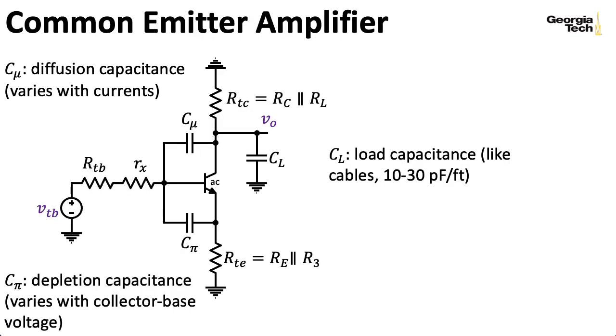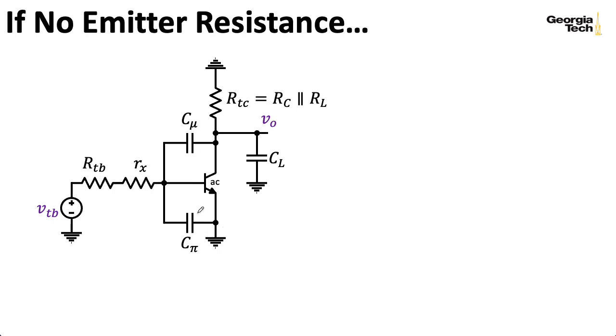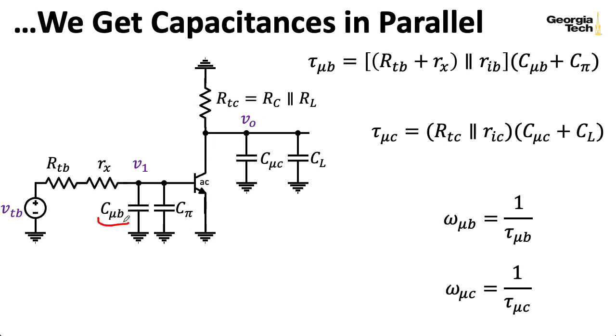Now, all of that complicated algebra became necessary because we had some emitter resistance down here. In the fully bypass case where R3 is equal to zero and hence RTE equals zero, this is a short. So if there's really no emitter resistance, this C pi is going straight to ground. And when I think about applying Miller's theorem to C mu, well, now I have my C mu B that comes from applying Miller's theorem to C mu. And I can just say that that's in parallel with C pi. So I can wind up with my two time constants as I originally had, where I'm just now adding C pi to that C mu B in my tau mu B time constant. So that's a lot easier to think about.